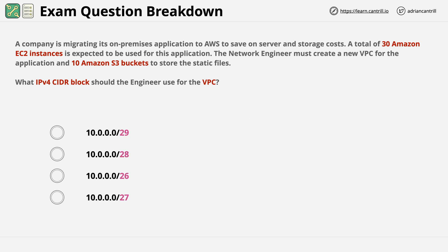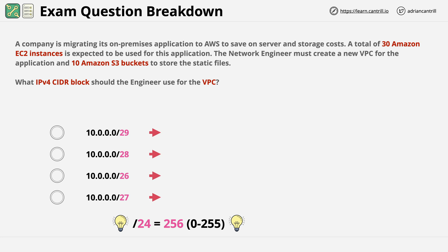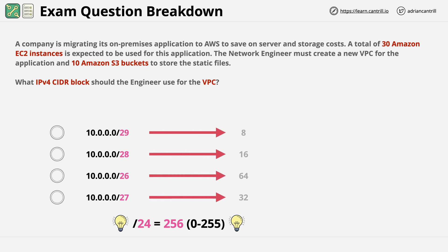The next step is to calculate how many IP addresses each of the answers has. This is another situation where you should start with something you know. A /24 range has 256 addresses — 0 through 255. Based on that, we can halve it for a /25, halve again for a /26, and so on. This gives us 8, 16, 64, and 32 addresses for answers A, B, C, and D.